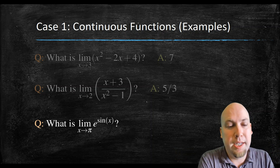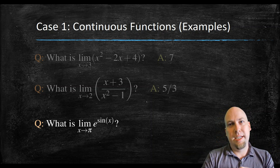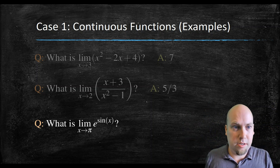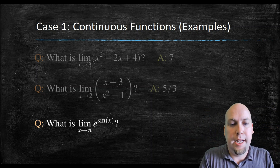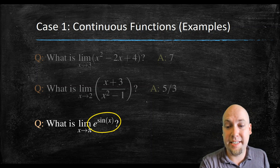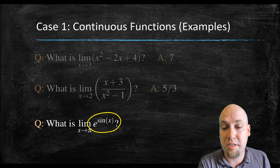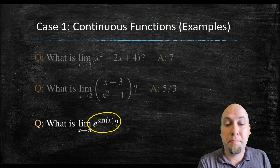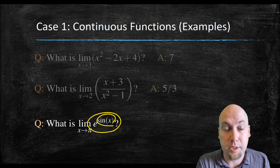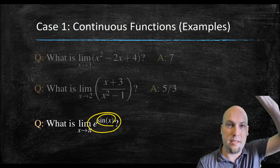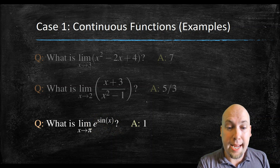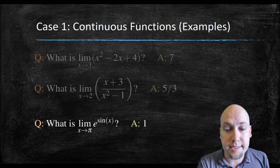One final example: e to the power of sine x, with x approaching pi. Exponential functions are continuous, and trigonometric functions are continuous as long as they're defined at the point in question. You compose continuous functions and you still get continuous functions, so just plug in x equals pi. You get sine of pi, which is zero, so then you've got e to the power of zero, which is one. That's your final answer — both the function value and the limit value, because that function is continuous.